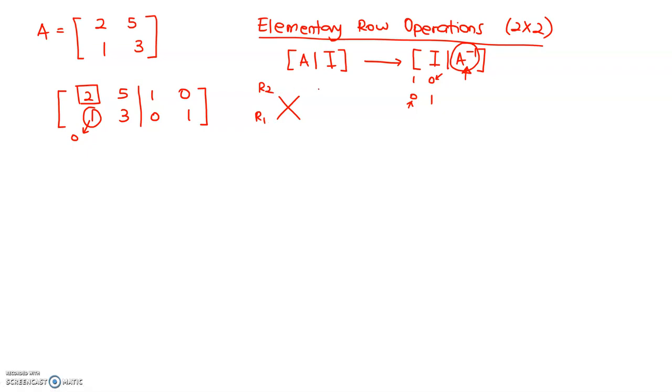Row 2, the value is 1. Row 1, the value is 2. So, the formula is 2 row 2 minus row 1. So, row 2: 1, 3, 0, 1 times with 2 first. And then row 1, the value is 2, 5, 1, 0. And then we are going to deduct them.